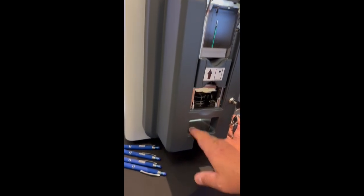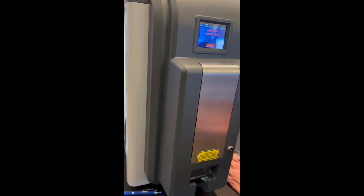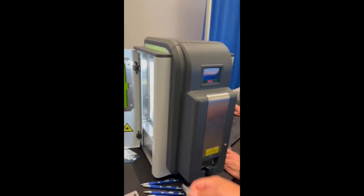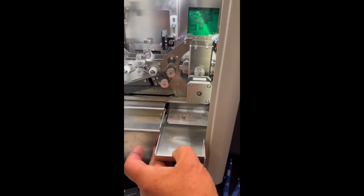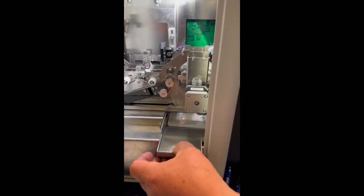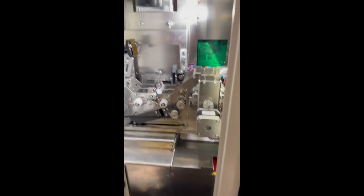And then this is the eject. Okay, so then this closes and it locks. Then to the front of the machine we have the reject bin. So this is where rejected cards go—approximately 10, maybe 15 cards.